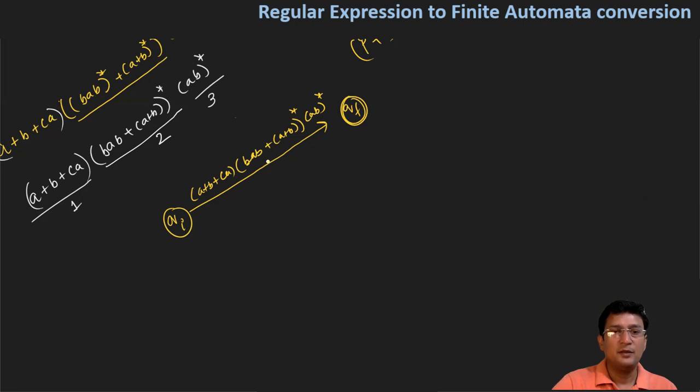We break this into components. The first component is (a+b+c), then we have the closure operations for the subsequent parts.